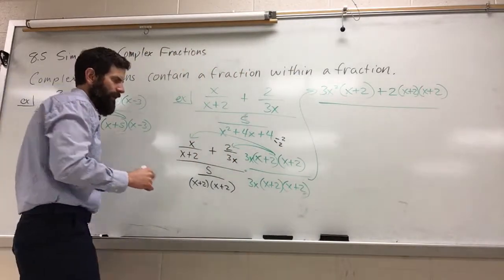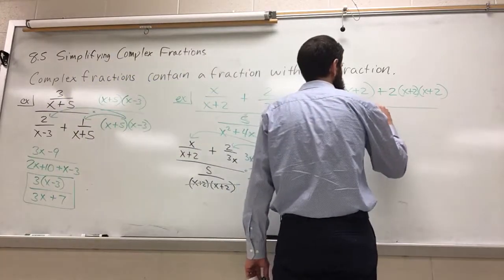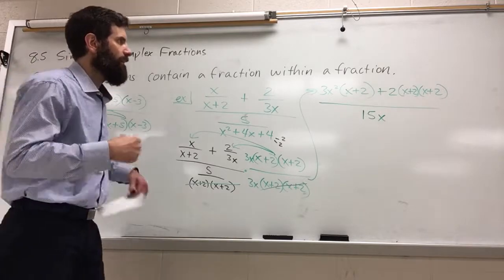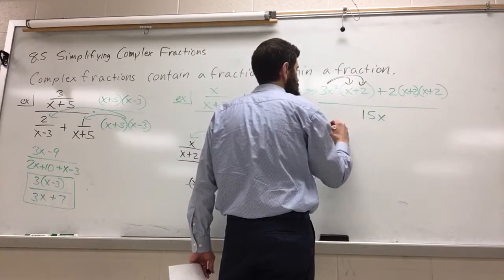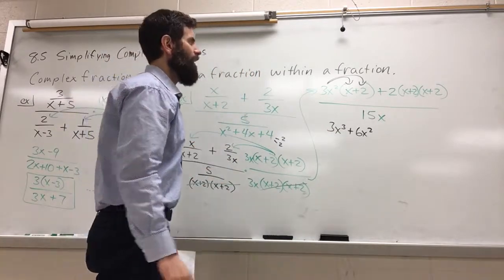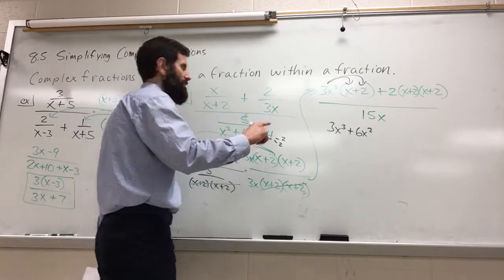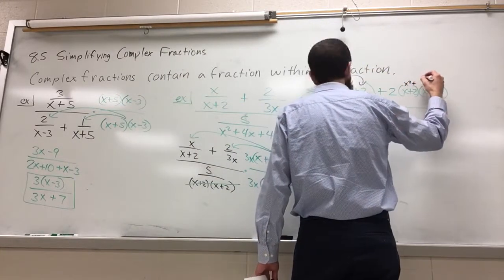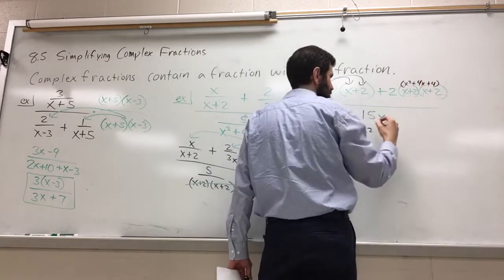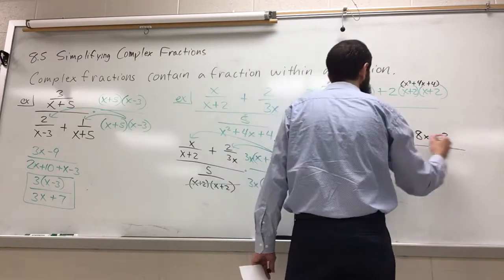In our denominator, the x plus 2s all divide out. We're left with 5 times 3x, which is 15x. So from here, just take your time multiplying it out. I'll distribute the 3x squared. We get 3x to the third plus 6x squared. I'm going to cheat a little bit. x plus 2 times x plus 2, I know what that's going to be. It's x squared plus 4x plus 4. So I'll get 2x squared plus 4x plus 4. I'm going to distribute that 2 to all of that. So I'll get 2x squared plus 8x plus 8 all over 15x.